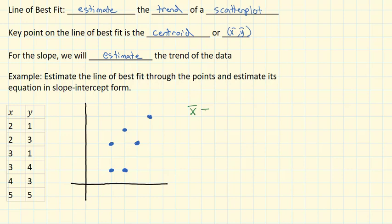To calculate the centroid, we first need to find the average of the x's. So I'll add up all the x's: 2 plus 2 plus 3 plus 3 plus 4 plus 5 is 19. And there's a total of 6 points. And 19 divided by 6, if we round it, is about 3.2.